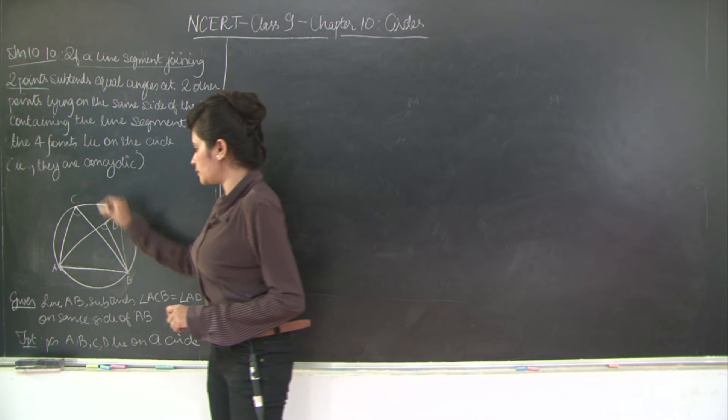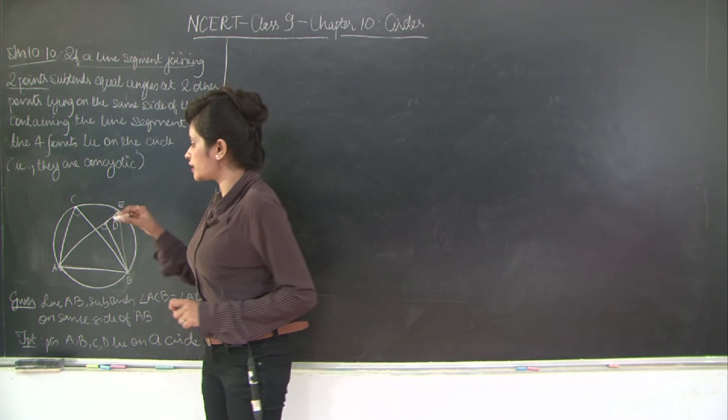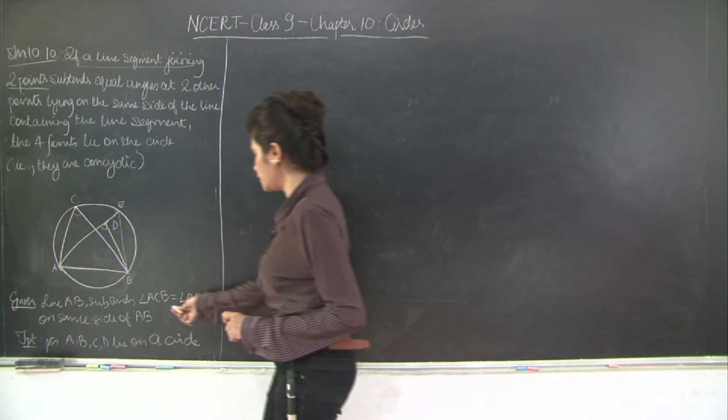Therefore what can I say that A, C, B is equal to A, E, B. But it's already been given that A, C, B is equal to A, D, B out here.